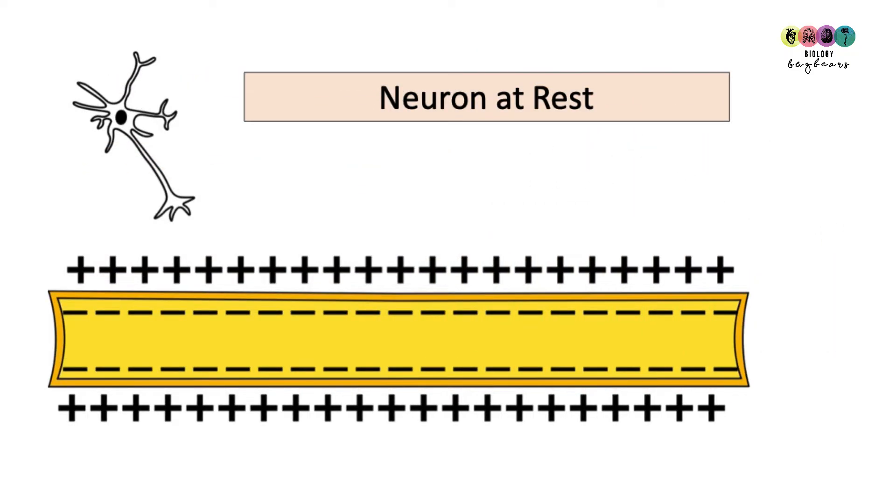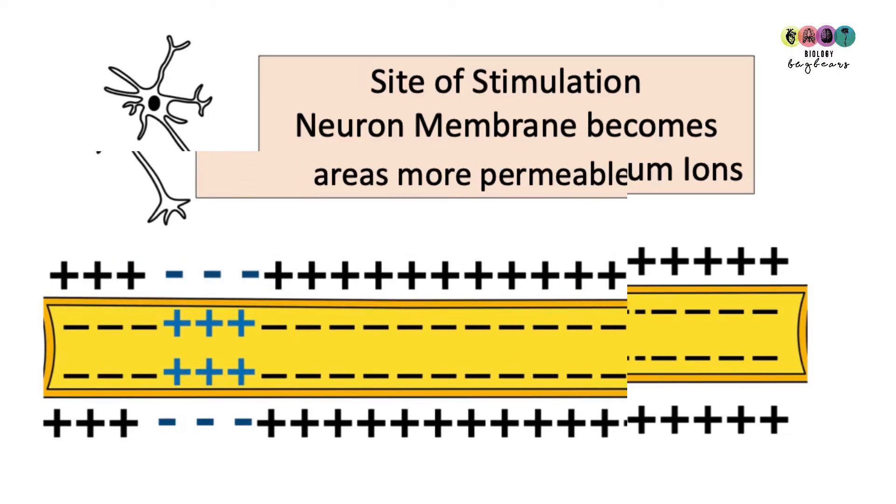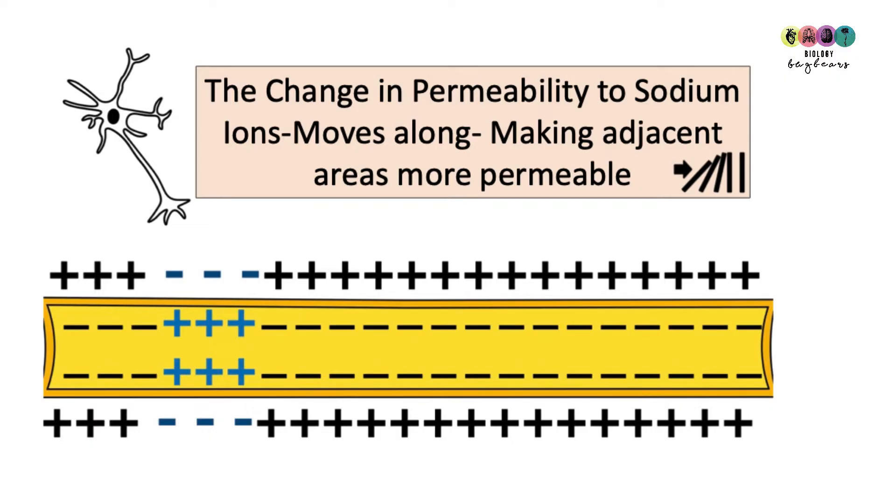When a neuron is at rest, it's more positive on the outside than the inside. The inside is more negative because there's lots of sodium ions on the outside. Then the detection of that stimulus, which is at the threshold, causes a change in the permeability. The neuron's membrane becomes more permeable to sodium ions. So they move from the outside to the inside. So now the inside of the neuron is more positive than the outside. Once this initial change in permeability is started, it makes other areas of the neuron more permeable, and this is how the impulse travels along. As soon as the impulse goes by a certain area, it resets by pumping those sodium ions back out.